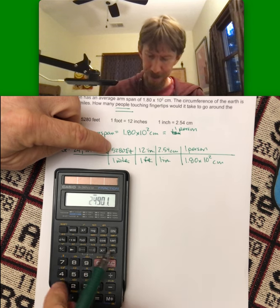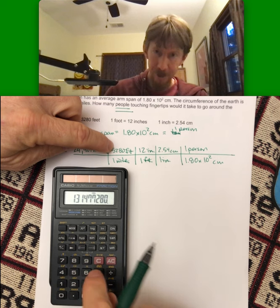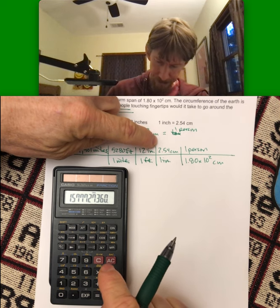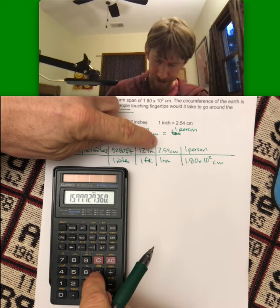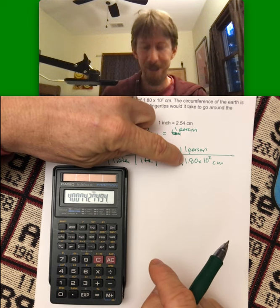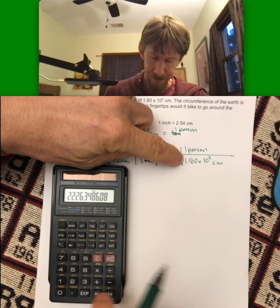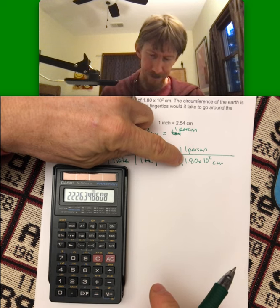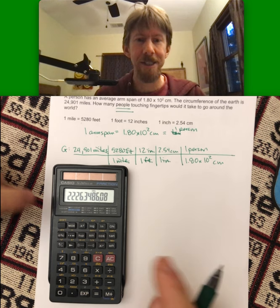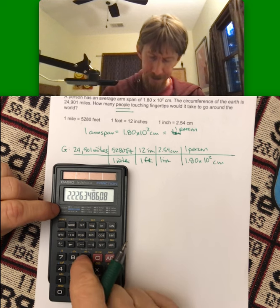Times 5,280, times 12, times 2.54, divided by 1.80 times 10 to the second. It takes a bunch of people, so I'm going to go into scientific notation mode.